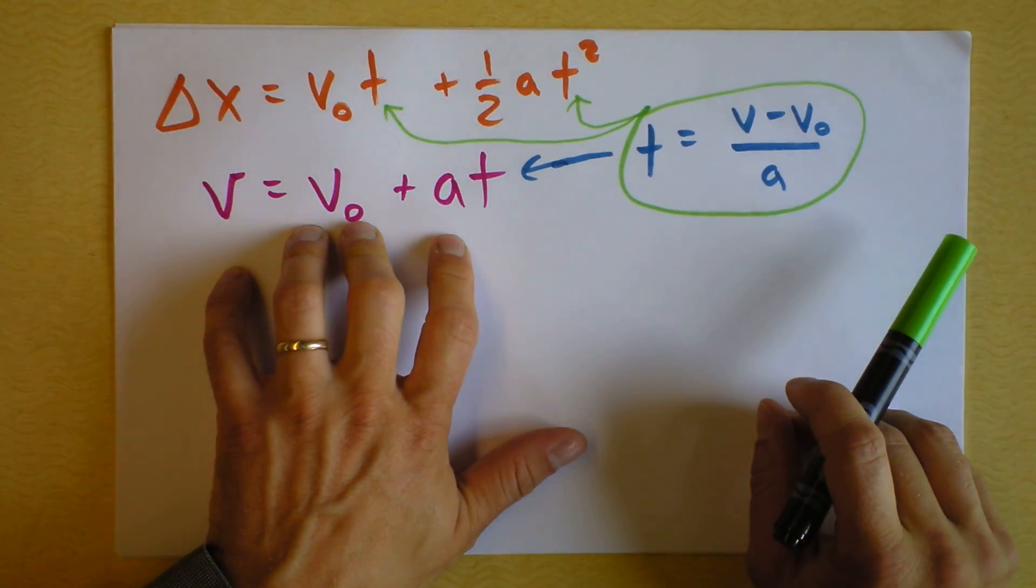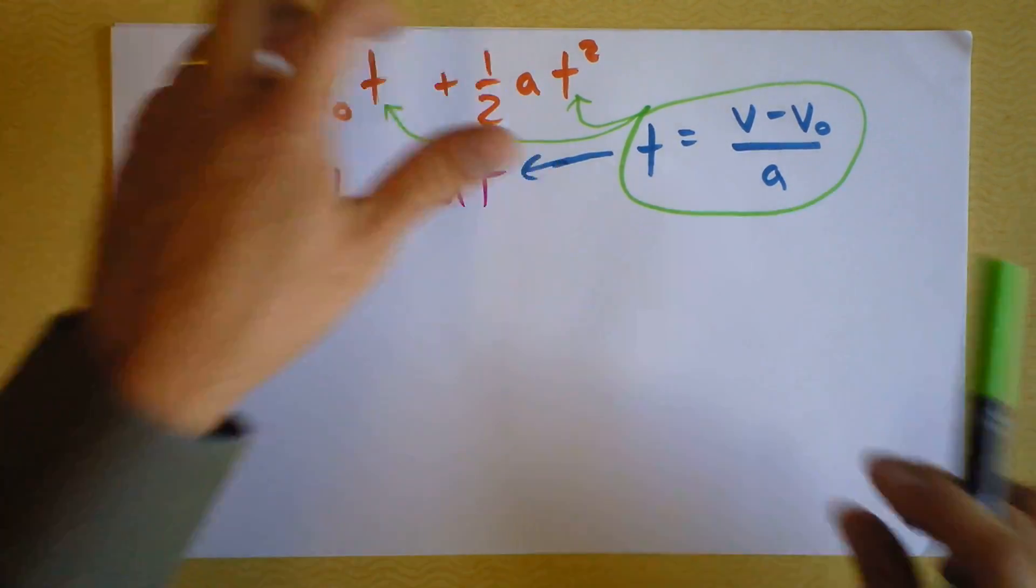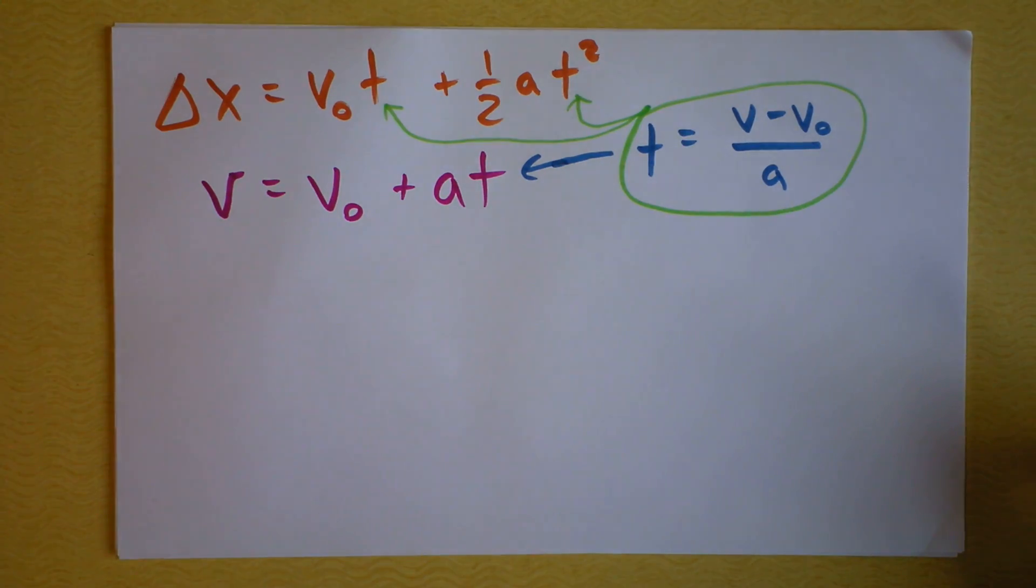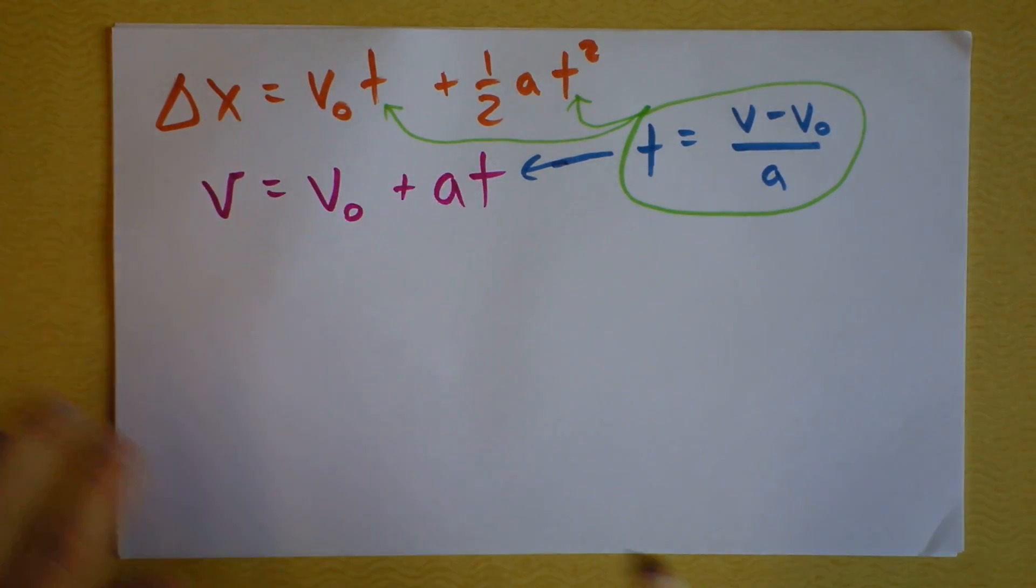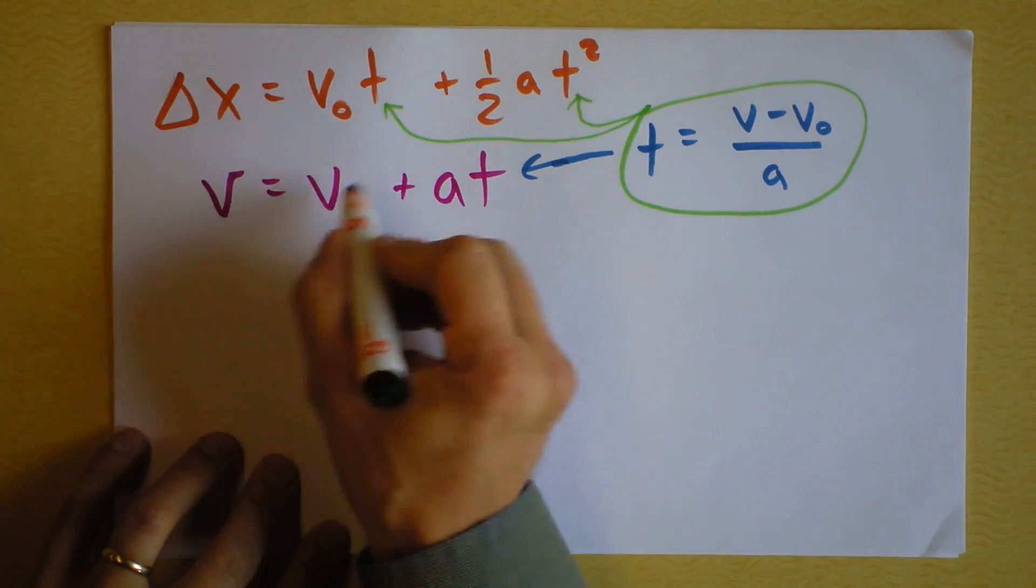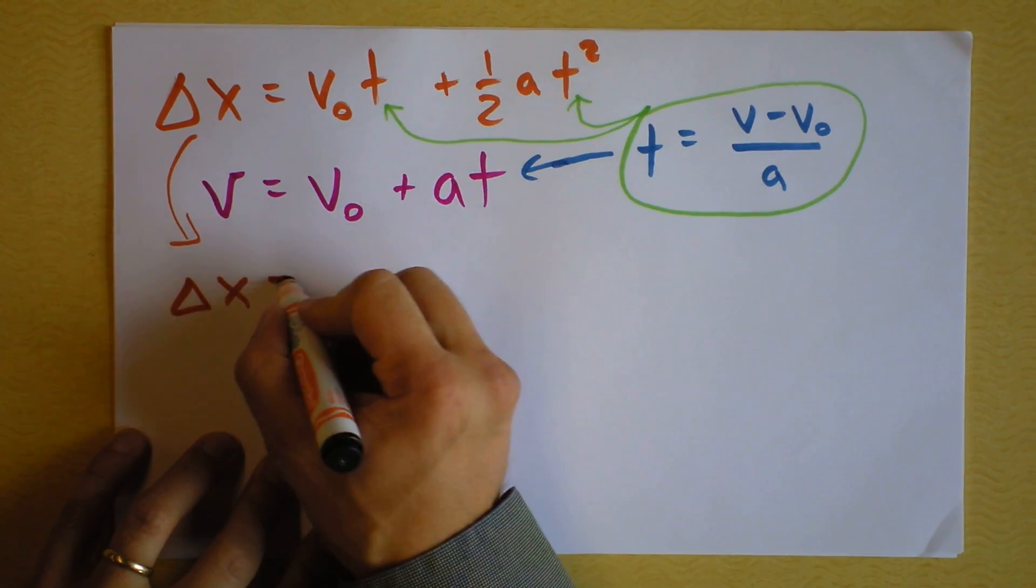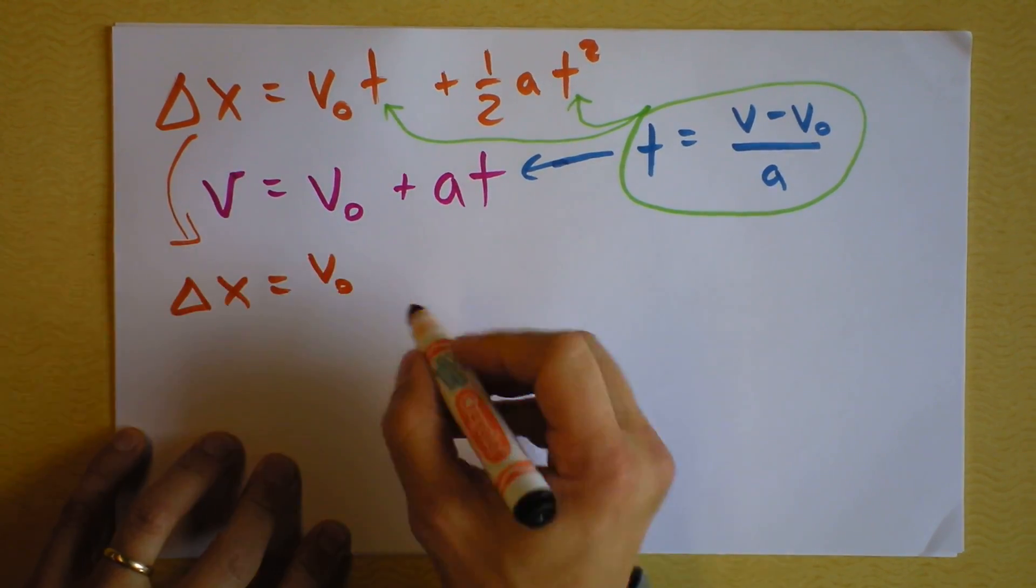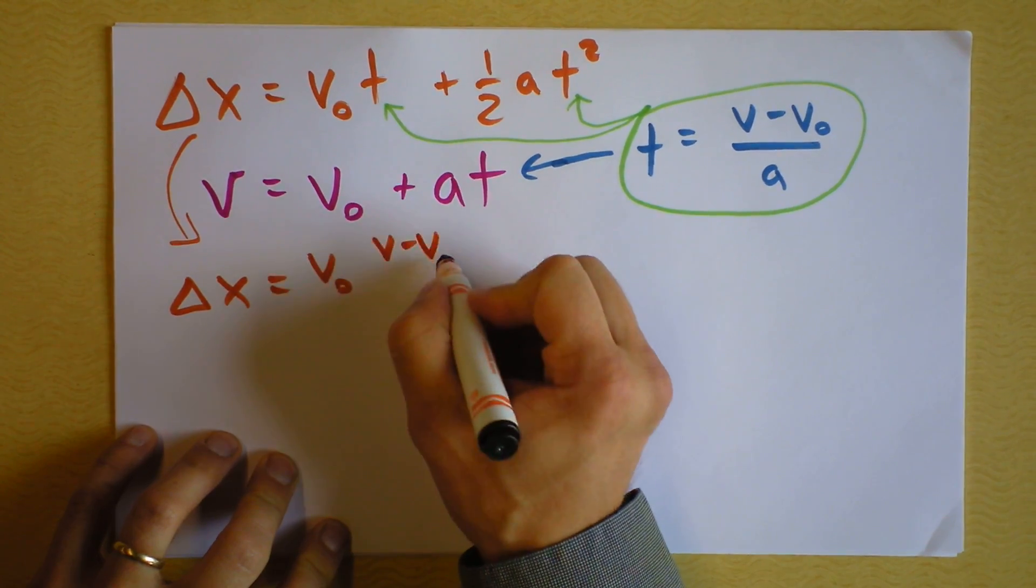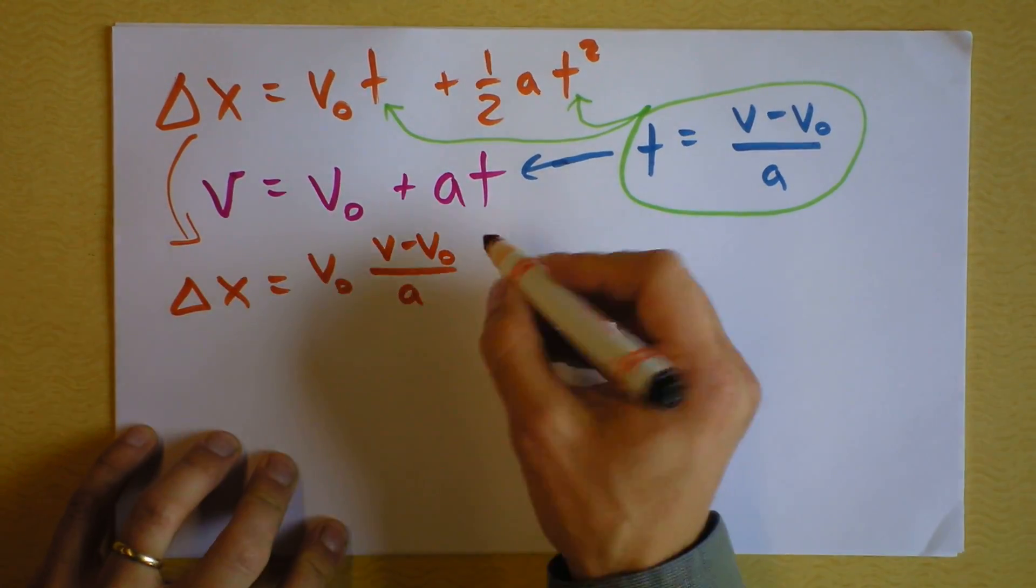The beautiful thing about taking this equation, solving it for t, and plugging it into this equation where the t is, is the t's will be gone. So, let's see what happens. We're going to get Δx on that left side. Δx, now this is coming down to here with the new plugged-in business. Δx equals v-naught times all that stuff right there, which is v minus v-naught over a.